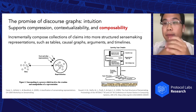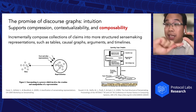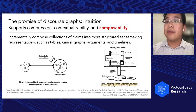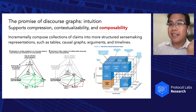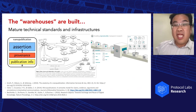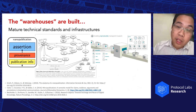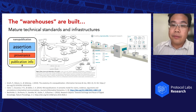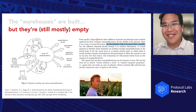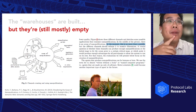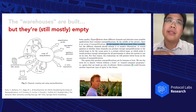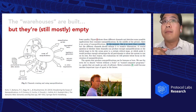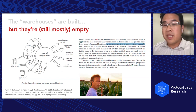Lastly, composability: if you have these units and connections between them, you can construct more interesting representations to help you reason about things like tables, causal graphs, or arguments. As I mentioned, these are not new ideas — there's a large body of work building out technical standards and infrastructure. We basically have most of the warehouses built, but they're still mostly empty. People talk about wanting an ocean of micro publications and discourse graphs, but at the moment it's no more than a puddle. This has been repeated across many different platforms. This is a key bottleneck — I call it the authorship bottleneck.